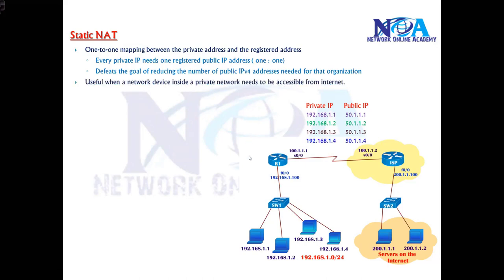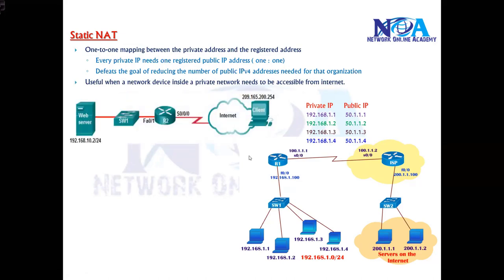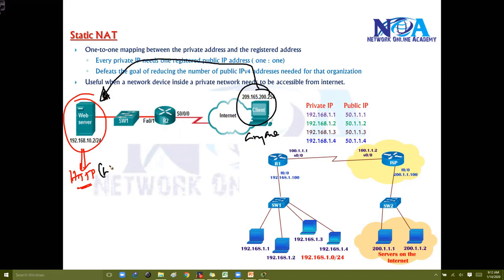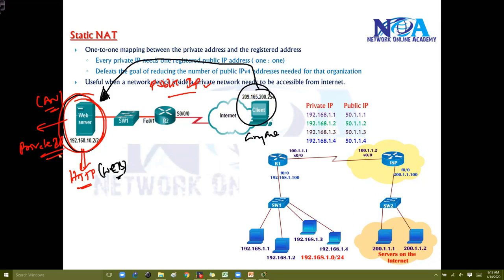Static NAT is more commonly used when devices inside a private network need to be accessible from the internet. For example, if you have an internal HTTP server and you want to host it on the internet so outside users can connect and access resources — like a company web server. To make this possible, it must have a public IP, because anything coming from the internet only recognizes public IPs. Internally in your LAN or server VLAN, private IPs are used, and it's not practical to change the entire subnet just for a single server.